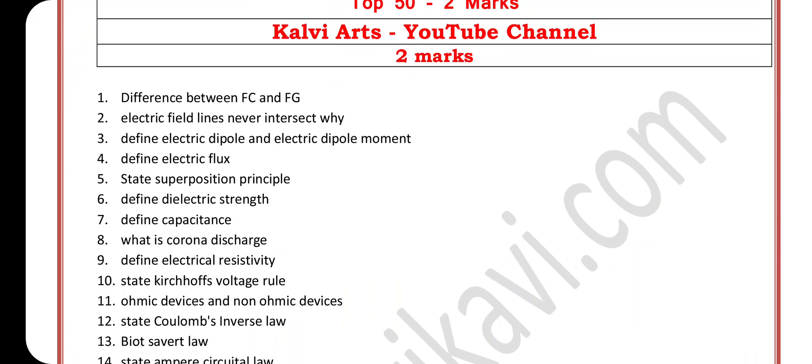Top 50 2-mark questions. First question: difference between FC and FG. Second, electric field lines never intersect, why? Third, define electric dipole and electric dipole moment. Fourth, define electric flux. Fifth, state superposition principle. Sixth, define dielectric strength.